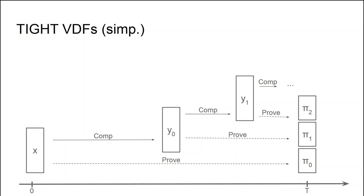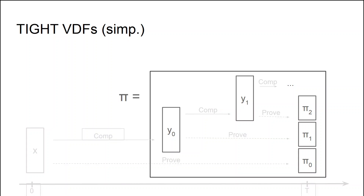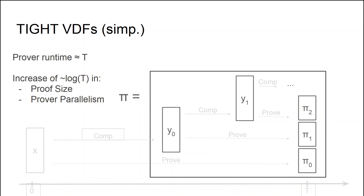We repeat this procedure recursively until the compute algorithm has only a constant number of steps remaining, at which point the verifier can simply recompute those steps itself. The proof pi of our VDF consists of all the intermediate values together with the corresponding proofs of well-formedness. The resulting VDF is tight, meaning the prover runtime is exactly t plus a constant number of steps, at the cost of an increase in proof size and prover parallelism by a factor of at most log t.